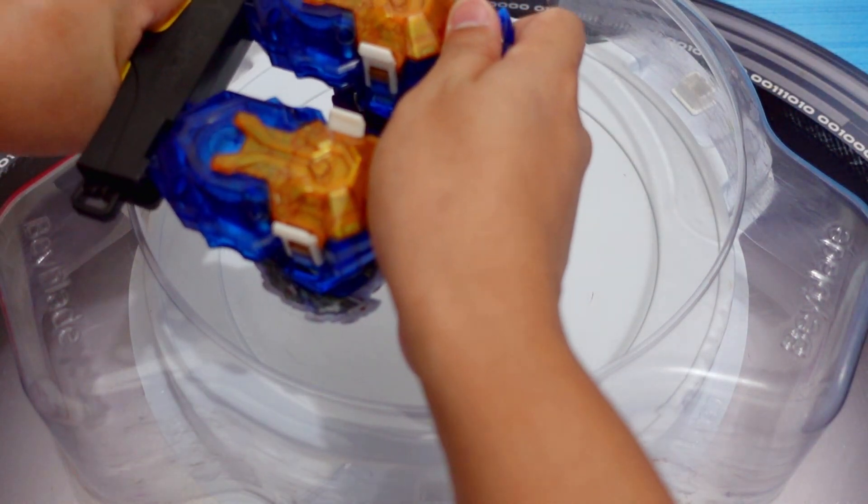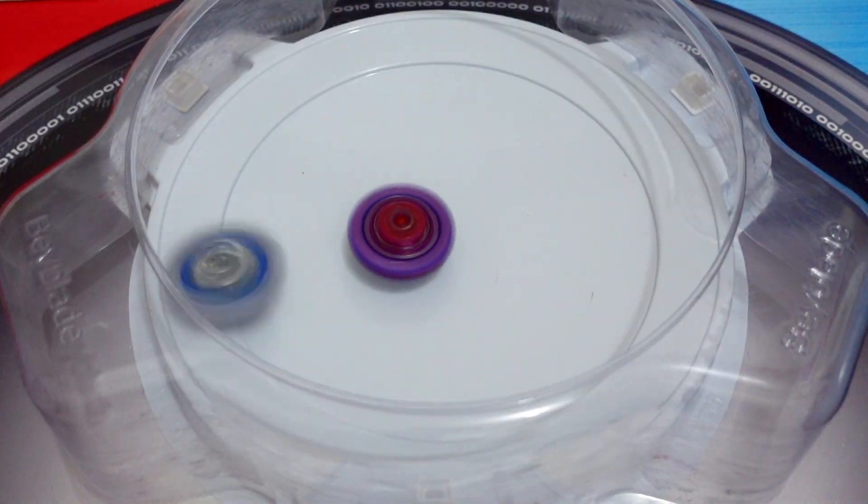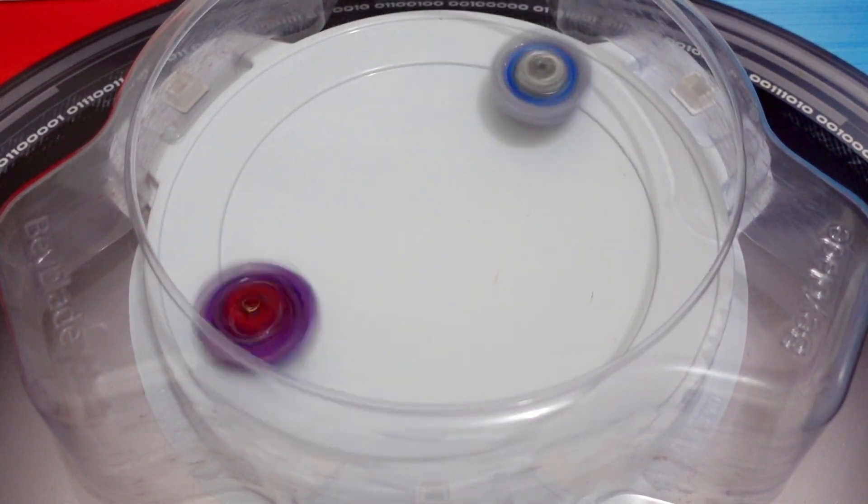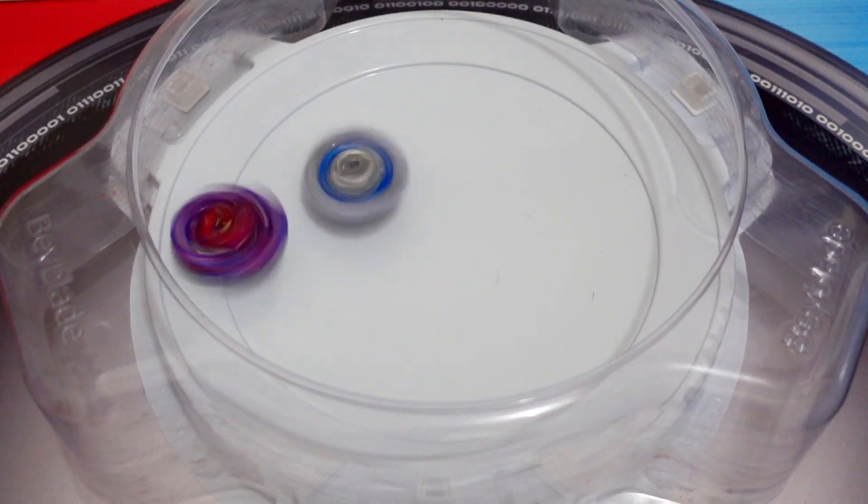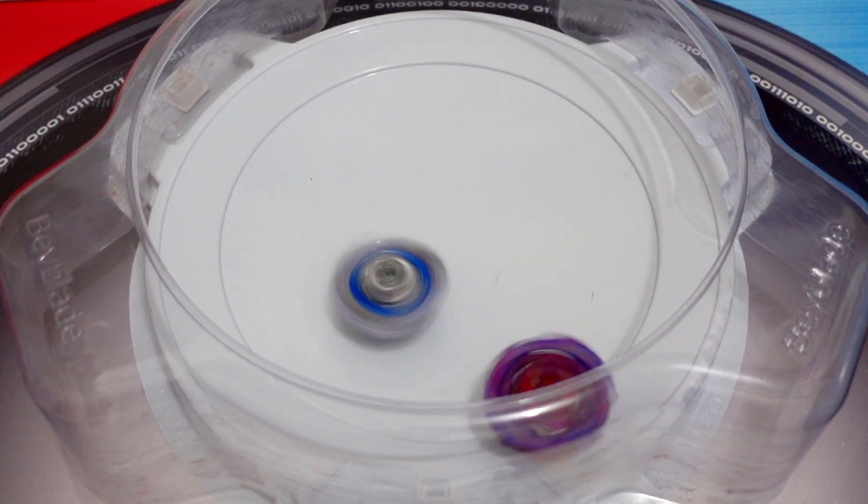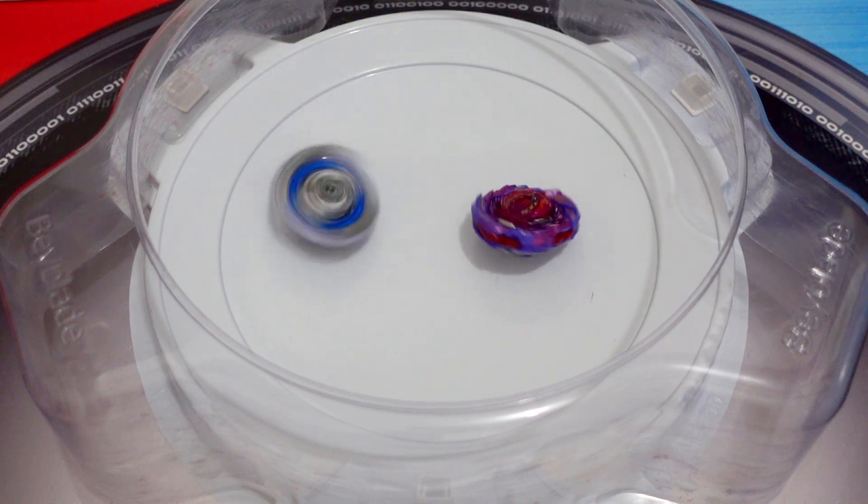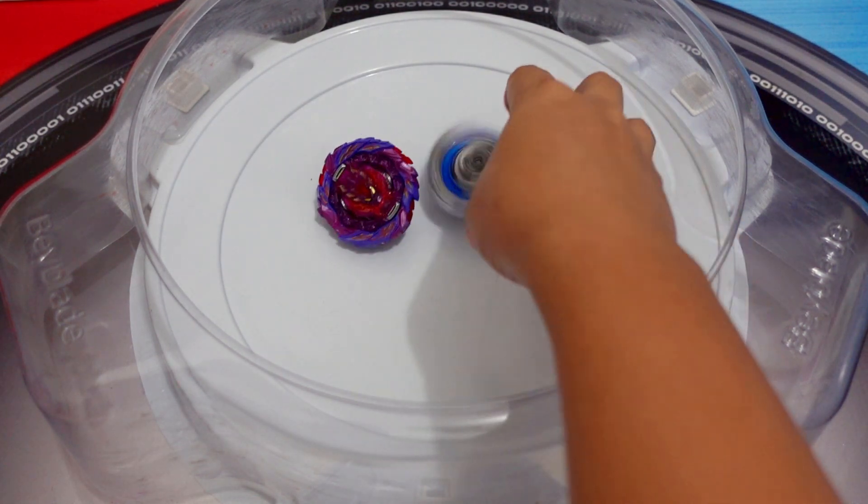B-190 Roar Bamut versus Guilty Longinus. 3-2-1, go. They are both spinning fast. Winner is Guilty Longinus.